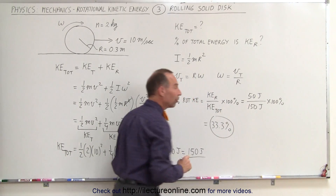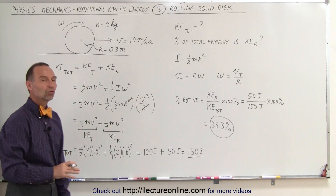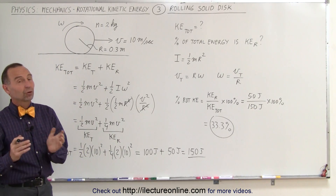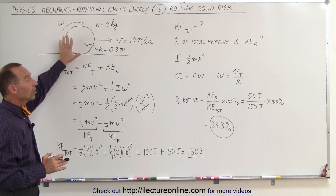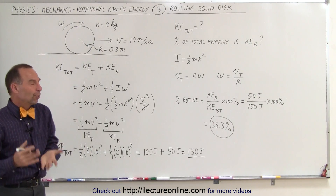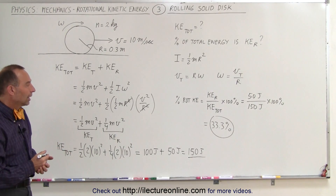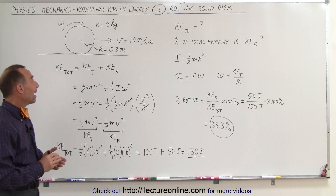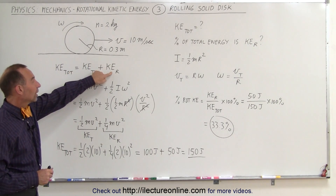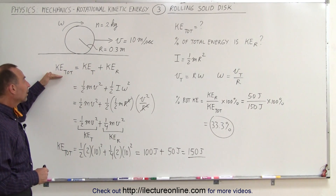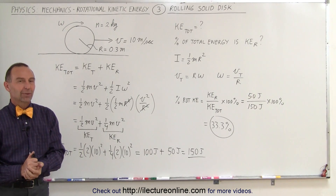Basically one-third of all the energy is rotational kinetic energy and two-thirds is translational kinetic energy. That's the case here because the rolling disk is a solid disk — it would be a different ratio if this were a hollow disk or a different kind of rotating object. And that is how we find the translational kinetic energy, rotational kinetic energy, and total energy of a rotating object like a solid disk.